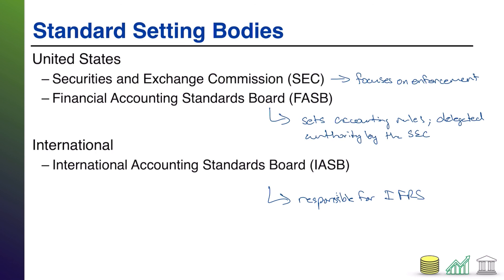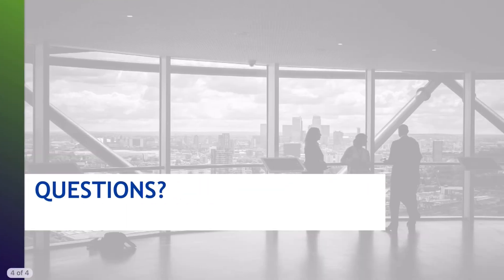So to summarize: the Financial Accounting Standards Board deals with U.S. GAAP here in the U.S. The IASB deals with IFRS for all countries that follow IFRS. The SEC is the legal authority over accounting in the U.S., but focuses more on enforcement these days. Hopefully you found this helpful — hope you join me for the next video. Thank you.